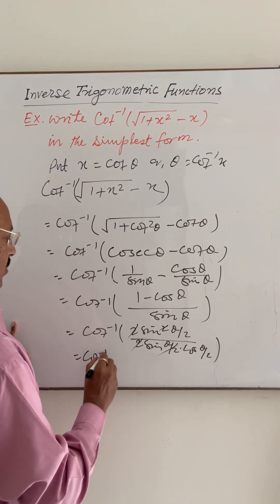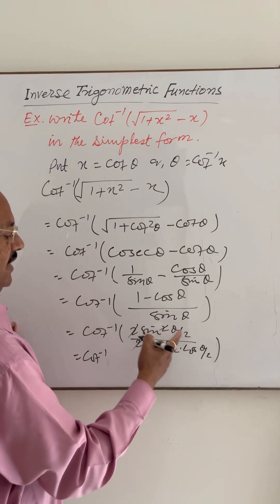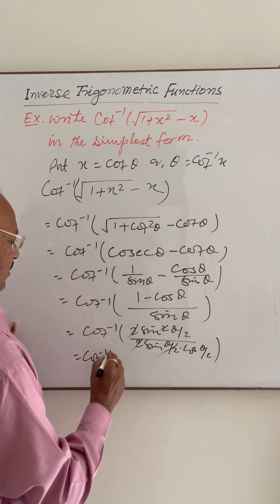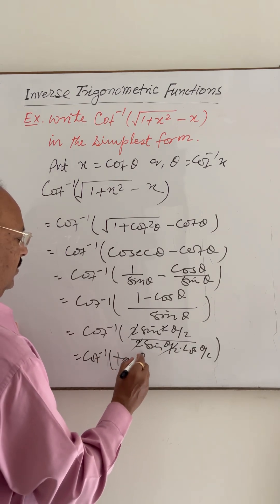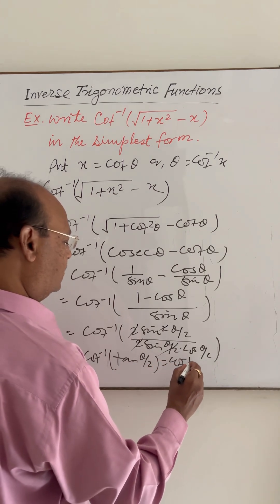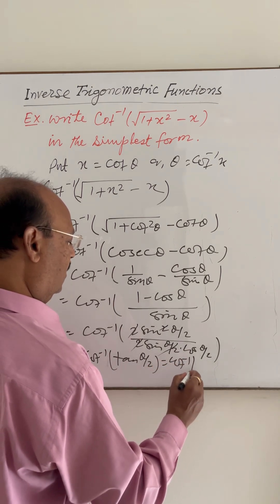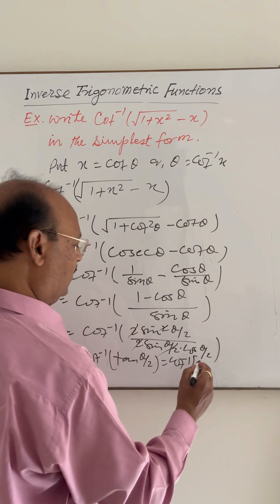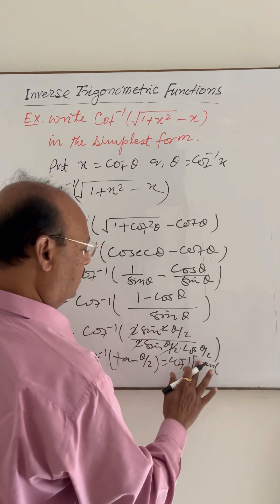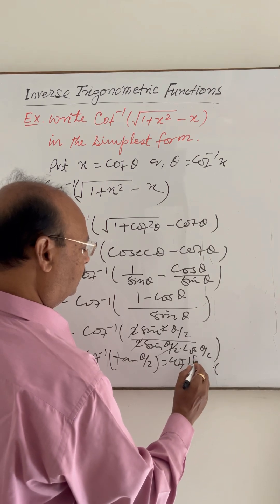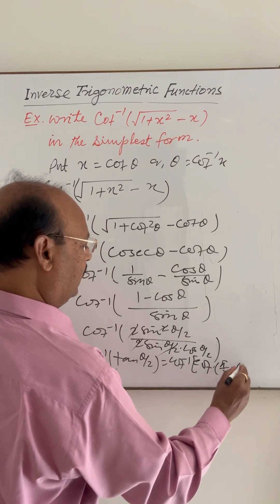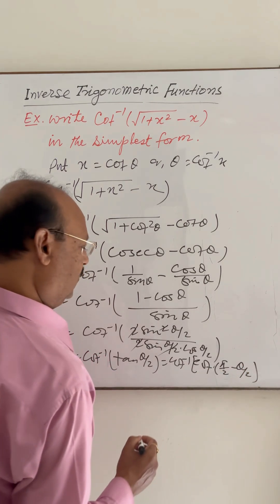This simplifies to cot inverse of sin(theta by 2) over cos(theta by 2), which equals cot inverse of tan(theta by 2). Now, tan(theta by 2) can be written as cot of (pi by 2 minus theta by 2).